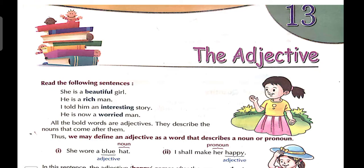All the bold words are adjectives like beautiful, rich, interesting, worried. They describe the nouns that come after them. Thus we may define an adjective as a word that describes a noun or pronoun. So this definition you have to learn and you have to write in your fair grammar copy. Example: I wore a blue hat. Now hat is noun. कैसी hat पहनी? Blue, so blue is an adjective. Second, I shall make her happy. So here her is a pronoun and happy is an adjective. In the first example, adjective is modifying noun, and in the second, adjective is modifying the pronoun. In this sentence, the adjective happy comes after the pronoun her.